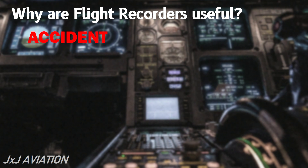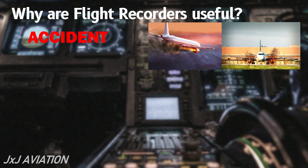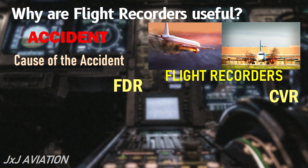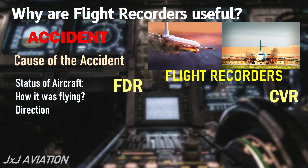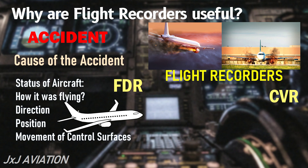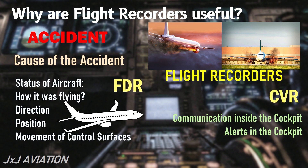If an accident occurs when an aircraft is in flight or on ground, the investigating team immediately starts looking for the flight recorders. The flight data recorder and the cockpit voice recorder provide information on what could be the cause of the accident. The FDR will provide the status of the aircraft, how it was flying, its direction, its position, and the movement of different control surfaces. The CVR will provide information on all the communication that took place inside the cockpit and the alerts that were triggered in the cockpit before the crash. By combining information from both the recorders, it becomes easier to determine the reasons for the crash.